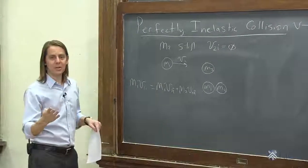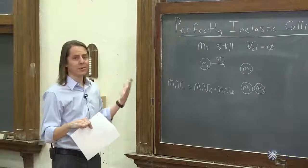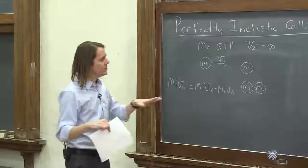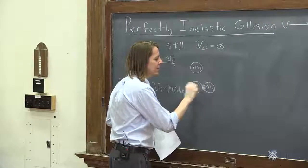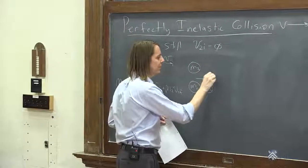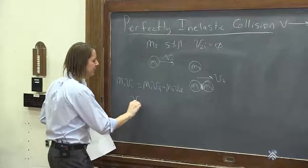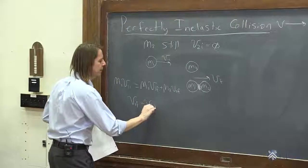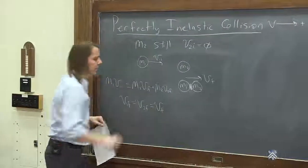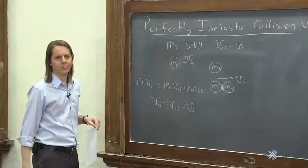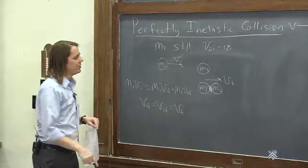We need the other equation. And in the case of a perfectly inelastic collision, you don't really deal with the energy equation. Your second equation comes from this requirement that they're stuck together. If they're stuck together, they move together. So your second equation, in this case, really is that V1 final equals V2 final. And therefore, you can just call it, in this case, let's just call it V final. It's not really the energy. It's the fact that they're stuck together that gives you the second equation.